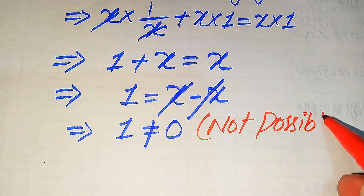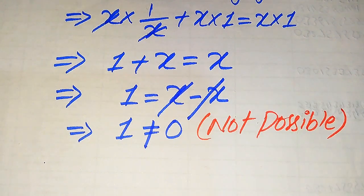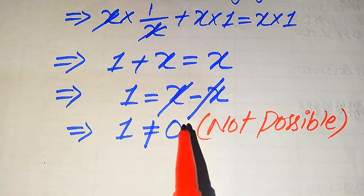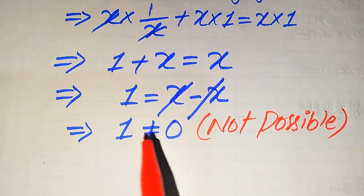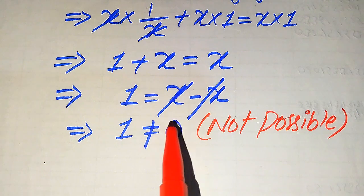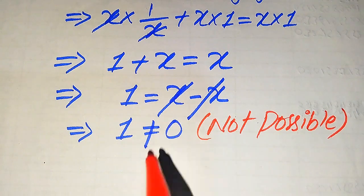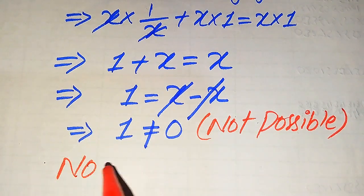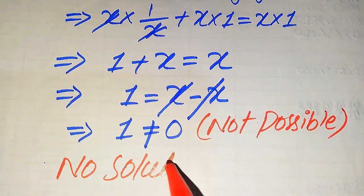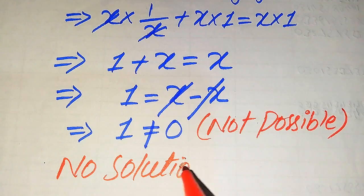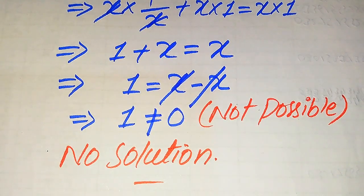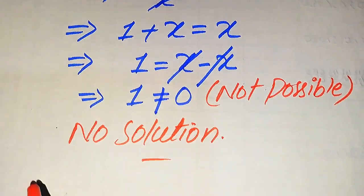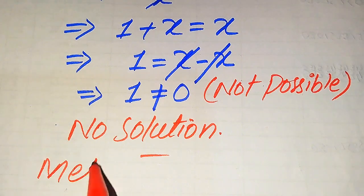Since this is not possible, it means we cannot get any value of x from here because x was removed from the equation. This means we cannot find any value of x, so this equation has no solution in general. This is the final answer for the first method, and now we move to the second method.